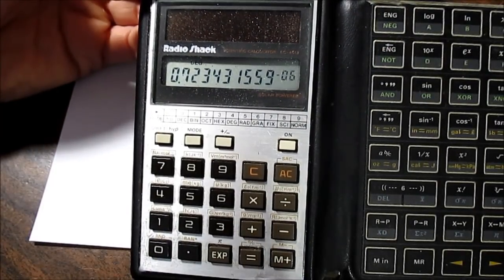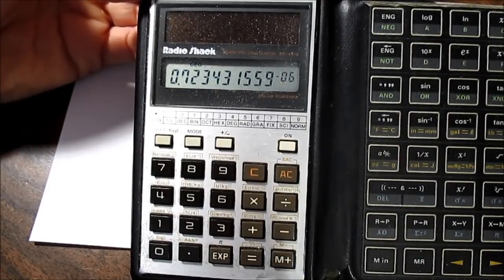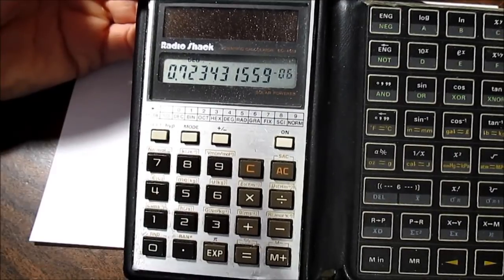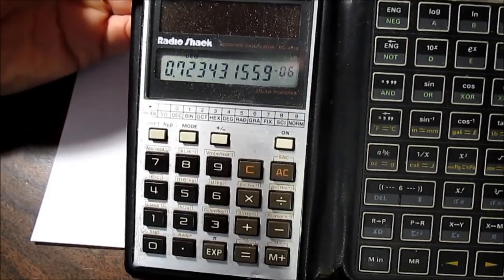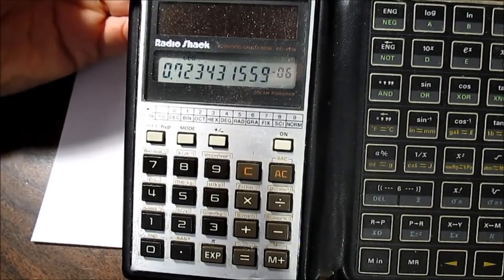Let's hit the engineering button so it puts it in a notation we can see better. So 723 nano-farads. And you're going, what? Where am I going to get that value? Well, go up, round up to the next nearest value.